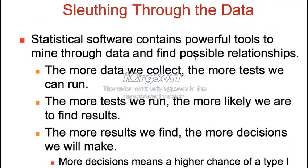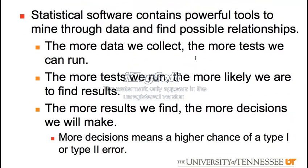The more decisions we make — this is looking through the data — the more chance we can make a Type 1 or Type 2 error. As we sort through the tree more and more, we're saying a variable is significant. We can get to things that aren't significant. Generally, your first split will be the most significant, but later and later splits will be less and less significant.